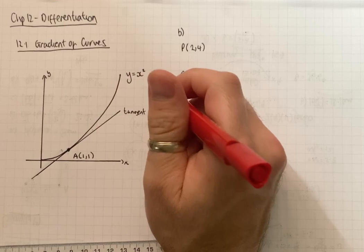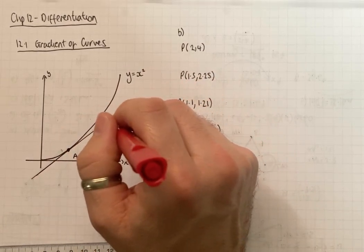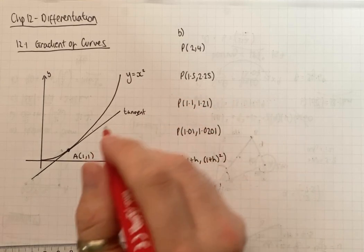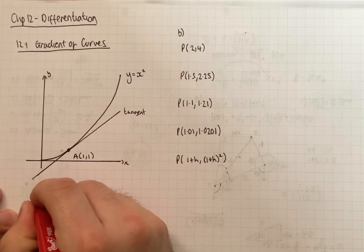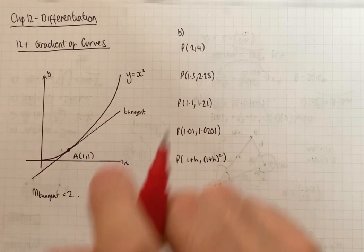Now, we're not to draw that accurately and I'll show you how to work it out later. But we can work out the gradient of that tangent line. And it works out to be 2. So the gradient of the tangent line is 2. Let's just take it for granted that it is.